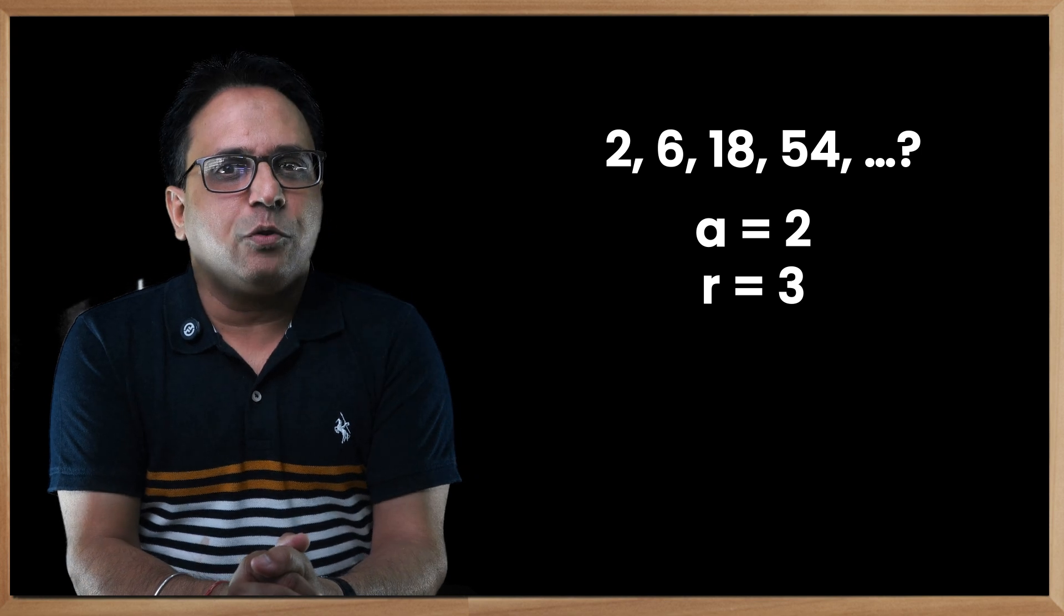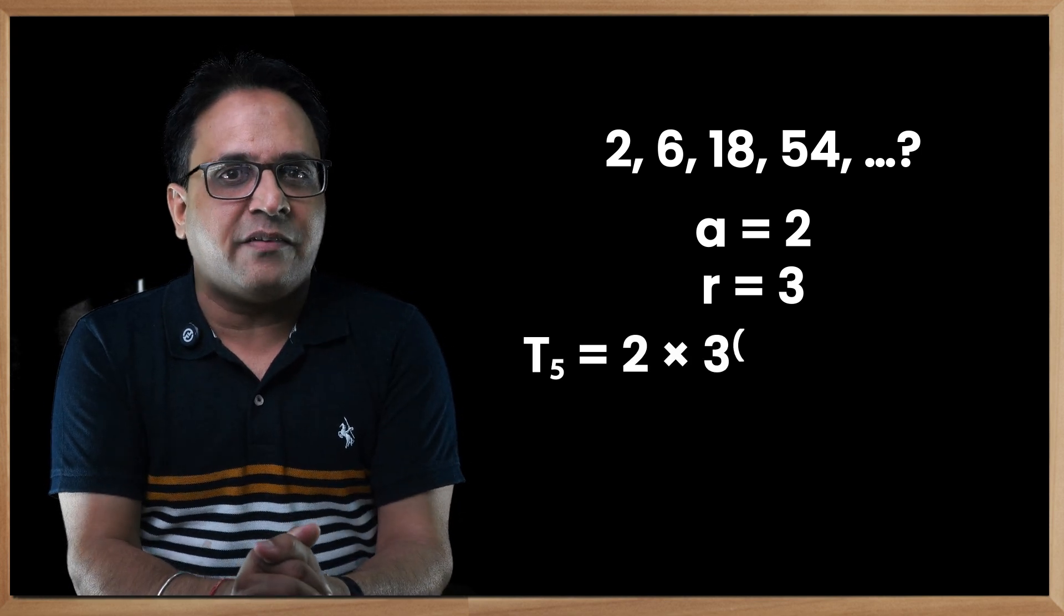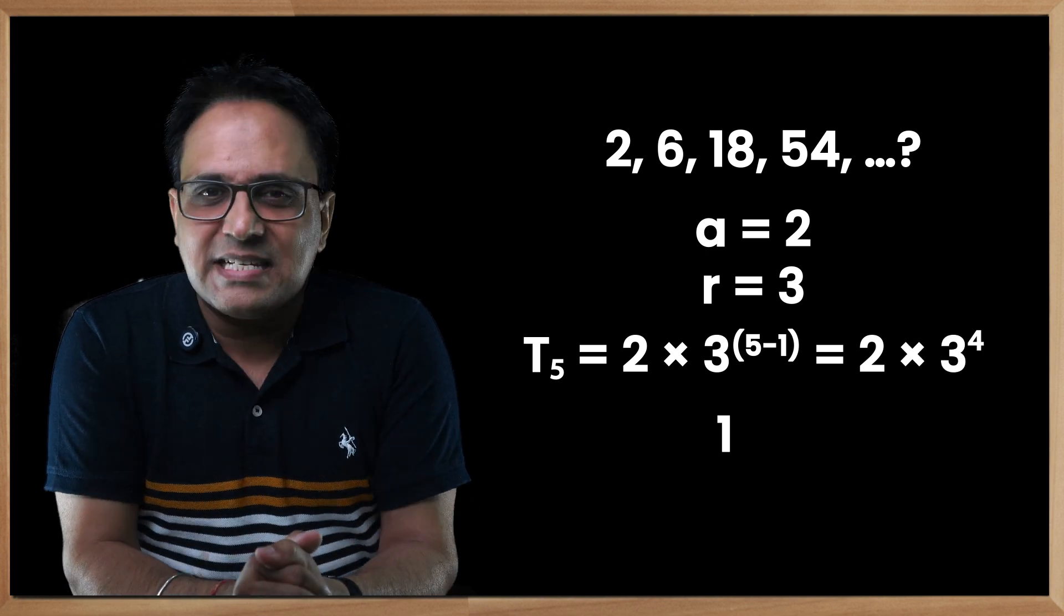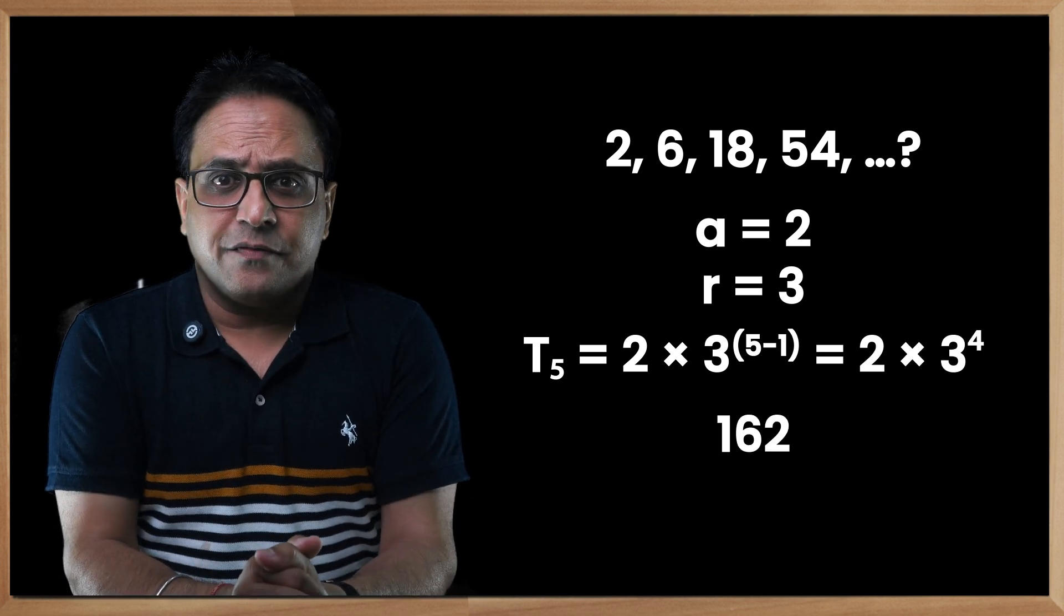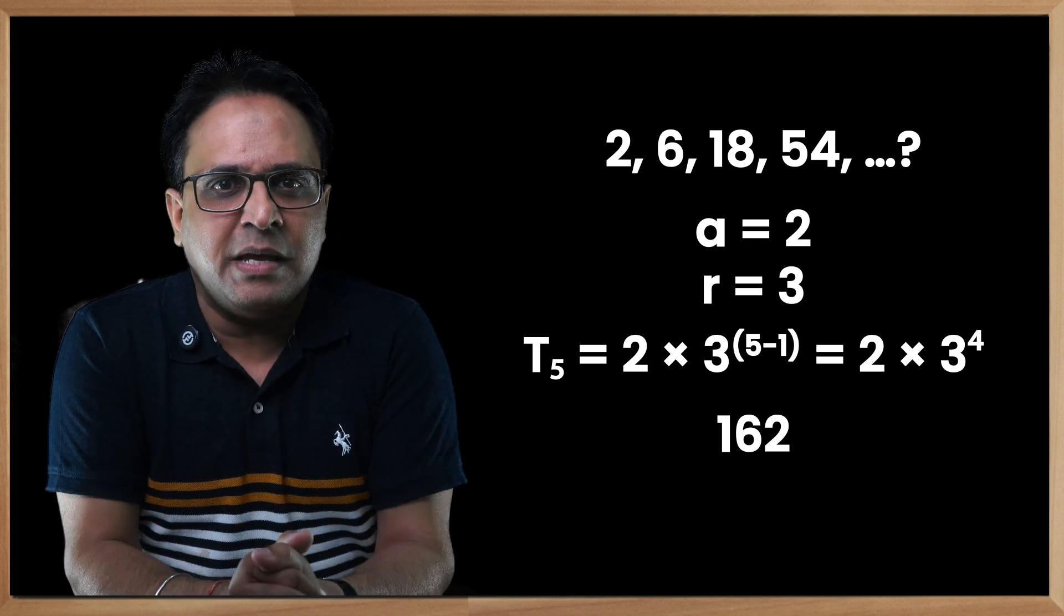Plugging into the formula, the fifth term comes out to be 2 multiply by 3 to the power 5 minus 1, which is 2 multiply by 3 to the power 4. So the fifth term is 162. But what if you need to calculate the sum of the first n series in your GP? There's a formula for that too.